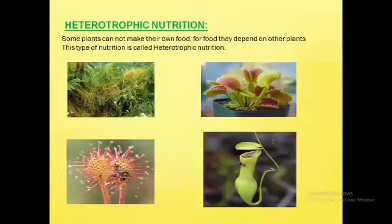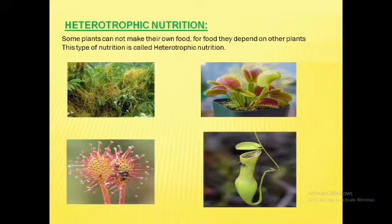Now the next type of nutrition is heterotrophic nutrition. Some plants cannot make their own food because they do not have chlorophyll — they are not green. Because of this, they cannot produce their own food and therefore depend on other organisms. This is heterotrophic nutrition — depending on others for food.